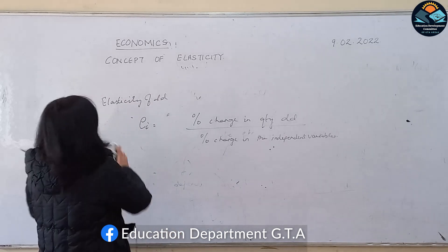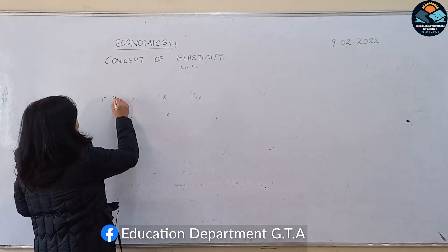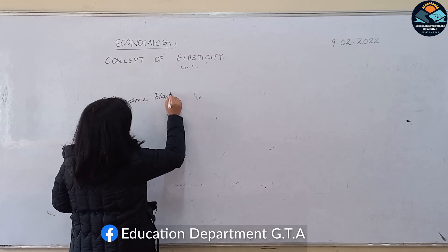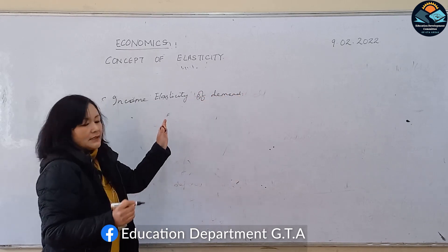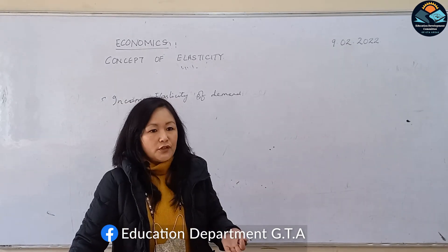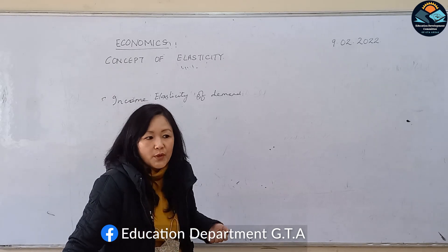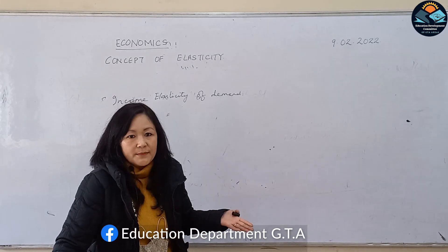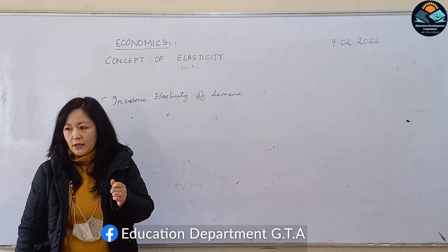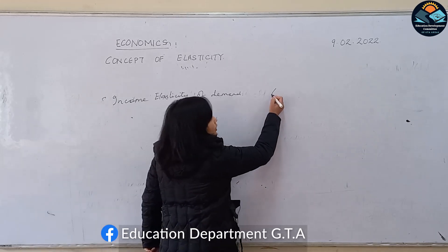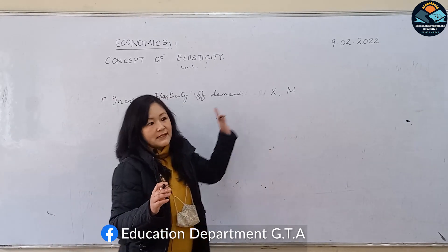Let's go on with the first variable, that is the income of the consumer — that is dealt with in income elasticity of demand. Income elasticity of demand means whenever there is a change in income of a consumer, how much will be the change in the quantity demanded. Income elasticity of demand is the percentage change in quantity demanded due to a 1% change in the income of the consumer, other things remaining constant. Here, X is the commodity and M is the money income.